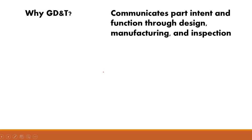So why do you use GD&T? There are three basic elements of GD&T. First, it helps communicate part intent and function through the design, manufacturing, and inspection process. What that means is that when you're designing, manufacturing, or inspecting a component, you're able to see how the part is put together and understand what the relevancy of the features are in relationship to each other.